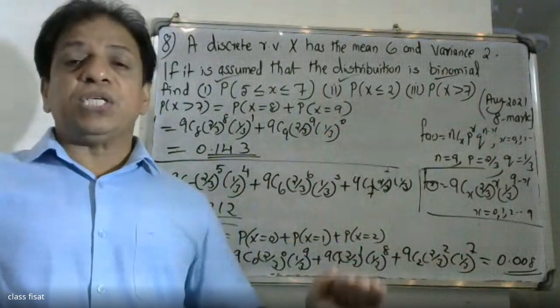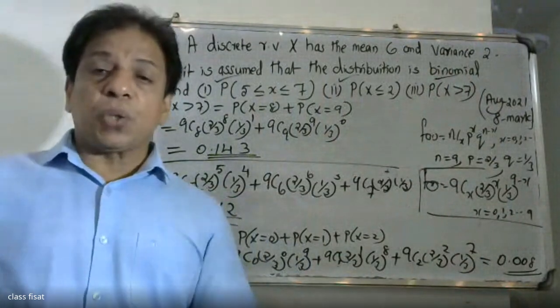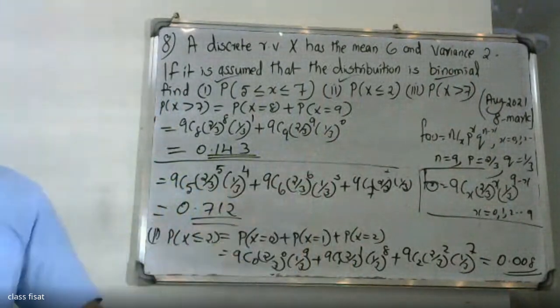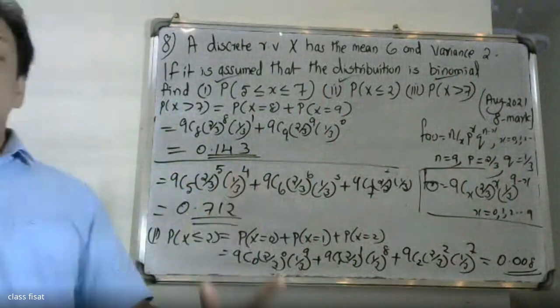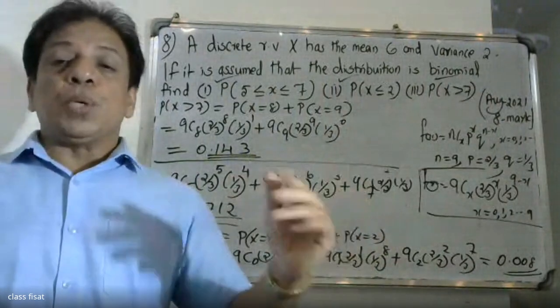In summary: variance equals npq and mean equals np. These two equations were solved to find the parameters. From these we derived the binomial distribution function and calculated the required probabilities.